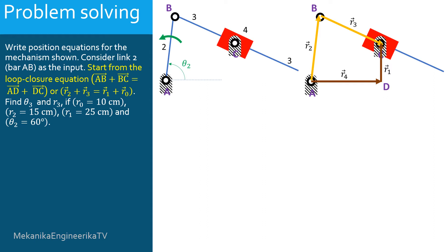In this mechanism, link 2, the bar AB, is the input. It is asked to start from the loop closure equation AB plus BC equals AD plus DC, or R2 plus R3 equals R1 plus R0. It is also asked to find the angle theta 3 and the modulus R3, if R0 is equal to 10 cm, R2 is equal to 15 cm, R1 is equal to 25 cm, and theta 2, the input, is equal to 60 degrees.